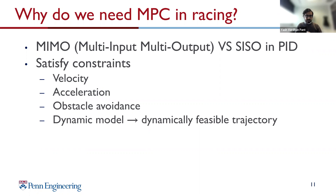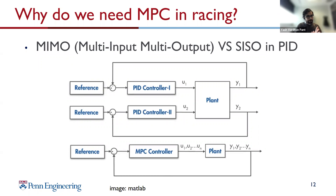To illustrate MIMO with PID, you would have to stack up multiple PID controllers, feed them independent error signals for different references, and send those control signals to your plant — your dynamical system. MPC, on the other hand, can take in a vector of outputs and generate a vector of inputs to control your car. This is something MPC handles in a very natural manner, whereas with PID you have to hack it.